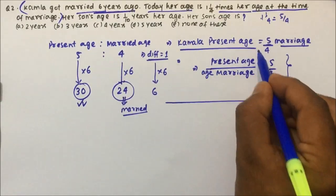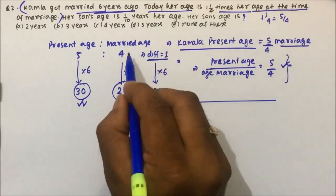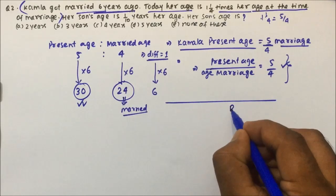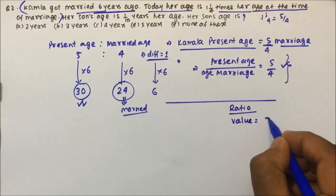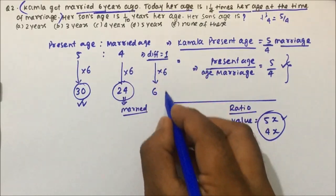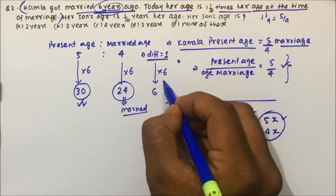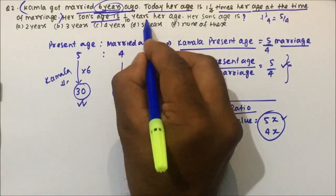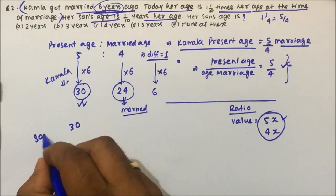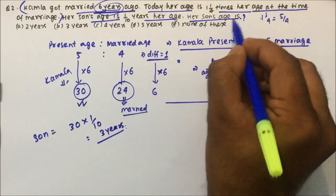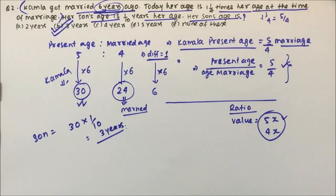From the equation we got a ratio: present age to married age is 5 to 4. The difference was 1, and since she married 6 years ago, we multiplied by 6 to get present age of 30. Now her son's age is 1/10 of her age. Kamala's age is 30, so son's age is 1/10 into 30, which is 3 years. Her son's present age is 3 years — option B is the correct answer. I hope you understood the concept and the solution. Thanks for watching the video.